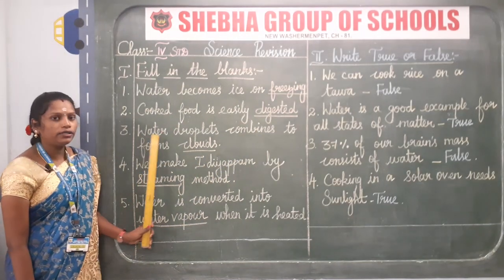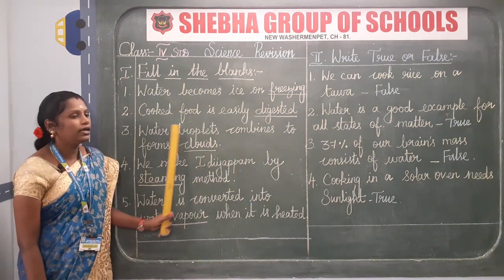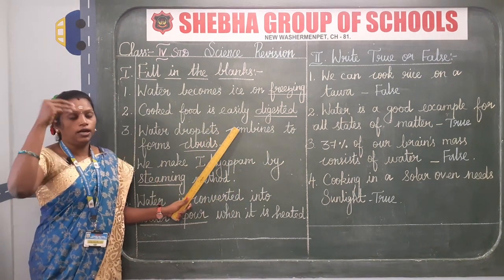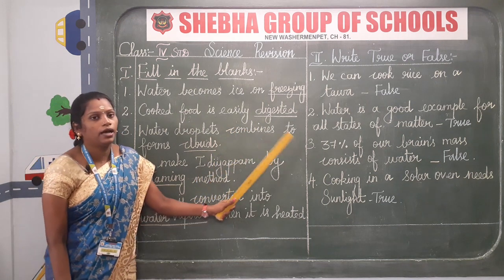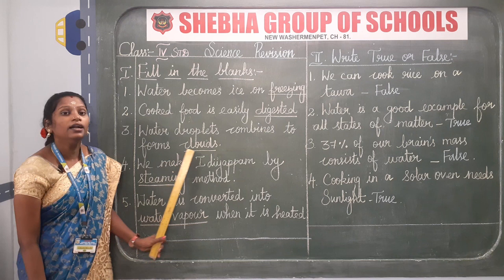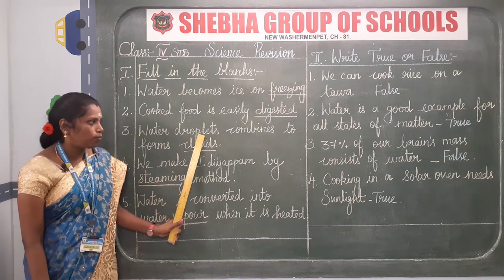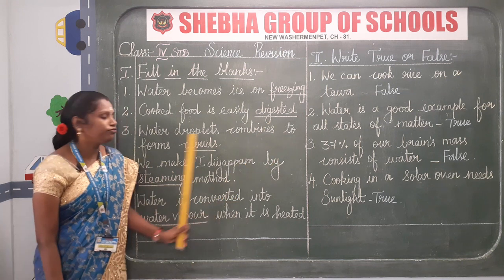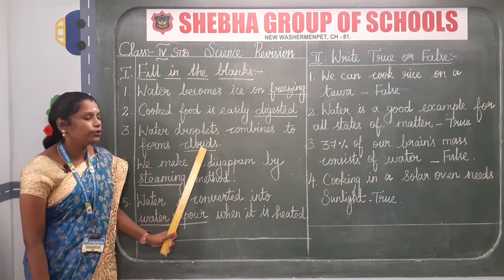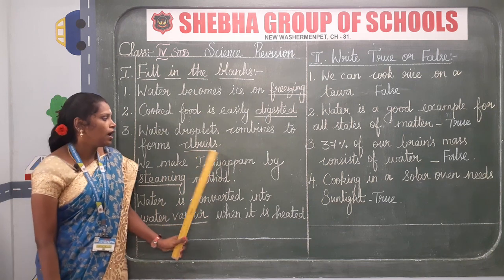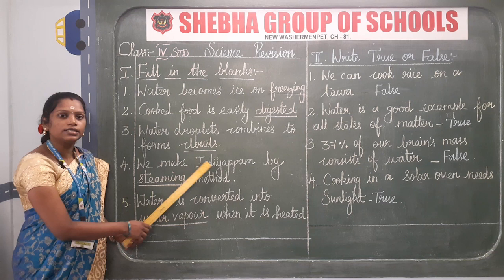Then third one: water droplets combine to form blank. After evaporation, water droplets combine and form clouds. The answer is clouds. C-L-O-U-D-S. Water droplets combine to form clouds. After finishing the answer, draw a line using scale and pencil.